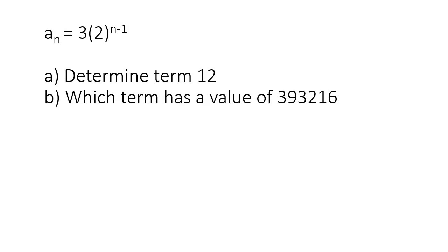Here's our last question. So here they give us the formula. Remember that these two cannot be multiplied because of the N minus 1. So here they ask for term 12. So you're literally just going to go put a 12 over there. And if you had to go work this out, you're going to get 6144.